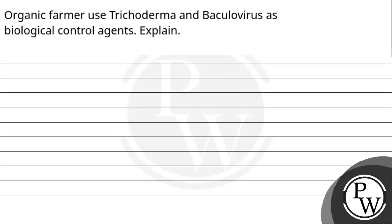Hello, let's see this question. The question says: Organic pharma used Trichoderma and baculoviruses as biological control agents — explain. So the question is asking why organic farms use Trichoderma and baculoviruses as biological control agents, and we need to explain that.